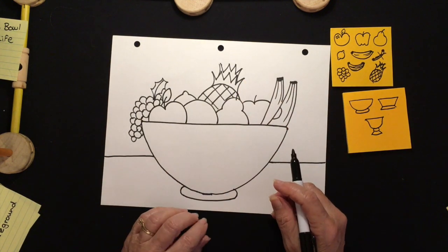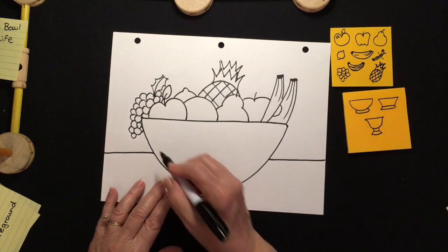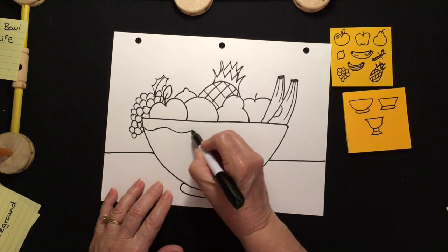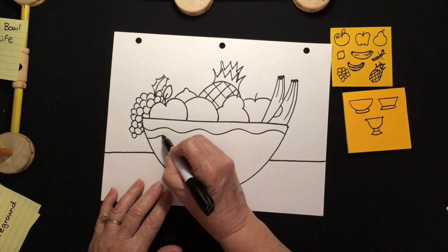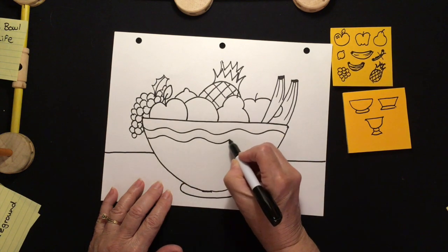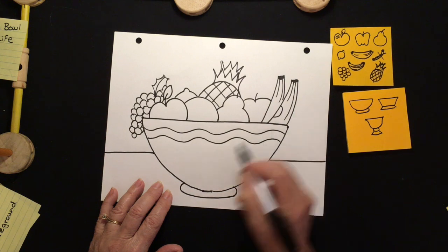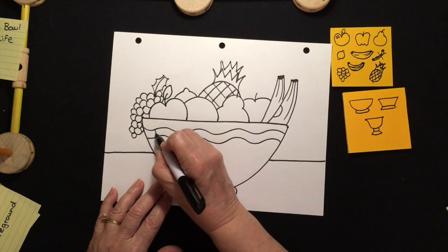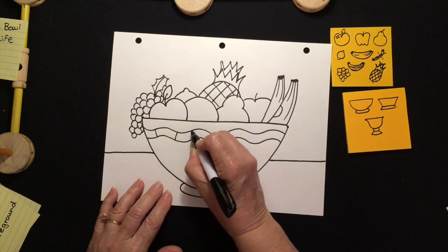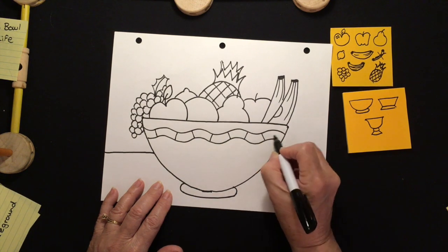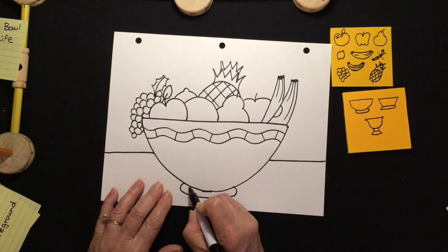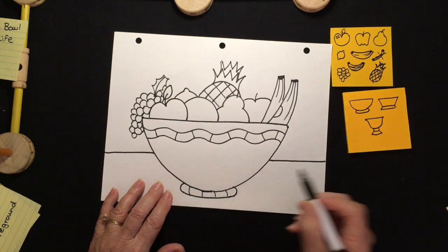Now I'm ready to add a design to my bowl. I kind of like this. I'm just making this up, and that's what you'll do. You'll make up your own design. I like that. I can't wait to add color. It'll be so lovely. And maybe I'll add some lines down here. That's nice.